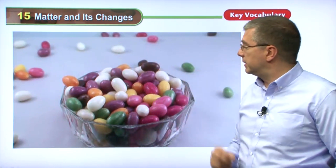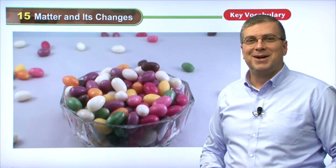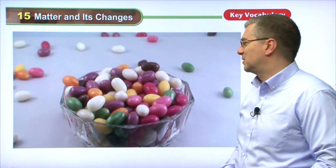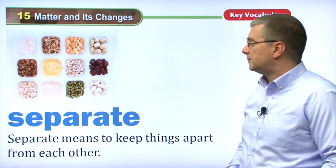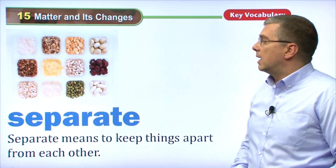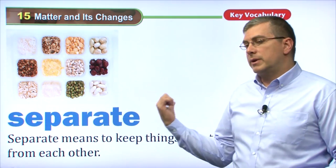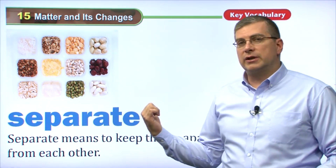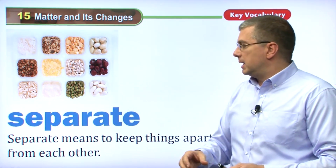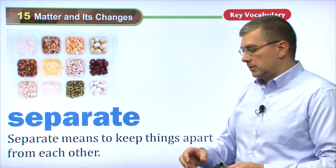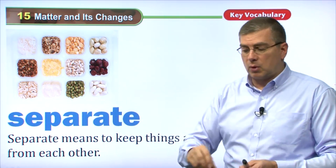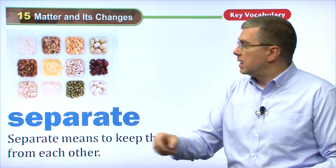I'm going to steal a piece and eat it. It's a mixture of different colors of candy. Now, it's interesting because with the candy that we just saw, we have a mixture of candy, but it's also easy — with the different colors — we could separate those colors out.